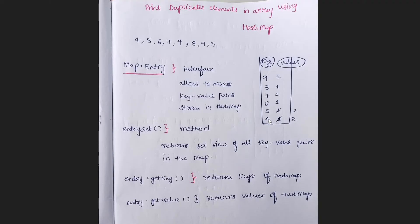Since 4 already exists, don't push it again — just increment its count by 1, so count becomes 2. Then 8 — not in the map, push with count 1. Then 9 — same. Now 5 — 5 already exists, so increment its count to 2. After traversal, access key-value pairs where the value is greater than 1. Those are the duplicate elements. Print those keys — that gives us 4 and 5.